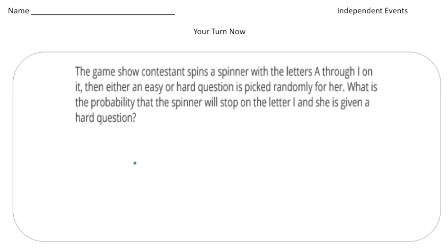So really, there's two different events happening. Event number one is she's spinning a spinner with the letters A through I on it. So A through I, that's nine letters of the alphabet. So there's nine possibilities for the first event. And then the second event is she's asked the question either easy or hard. So that's two possibilities for this one.